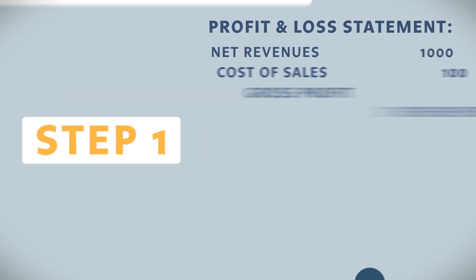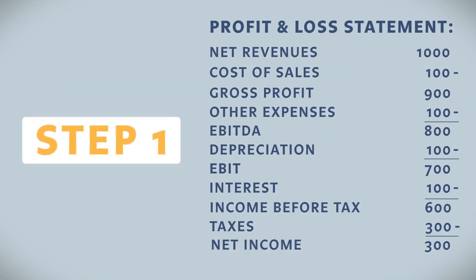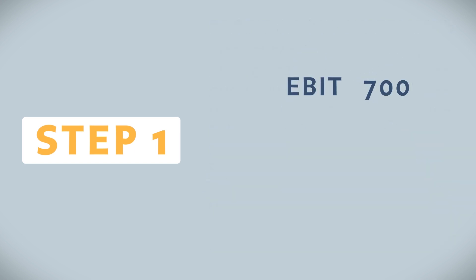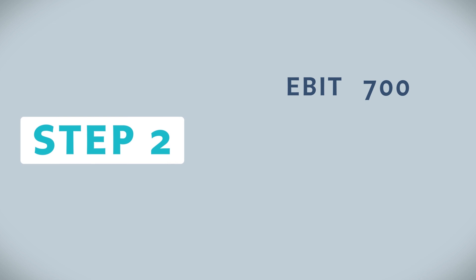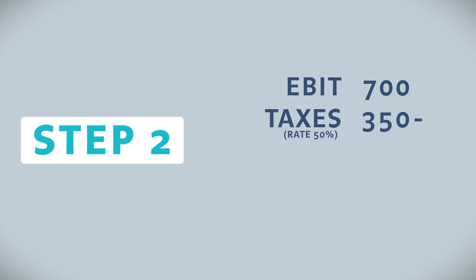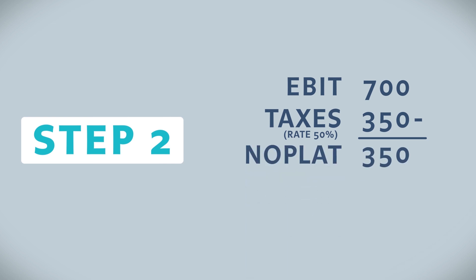Step number one. Let's have a look at our profit and loss statement from our previous video. We will take the EBIT of 700. Step number two: of the 700 EBIT we are going to deduct taxes of 50 percent. This gives us 350, and this is what we call NOPLAT.